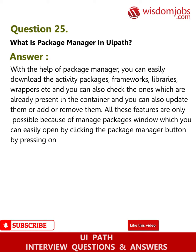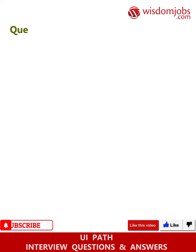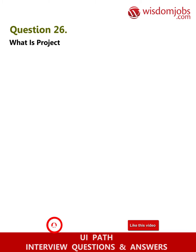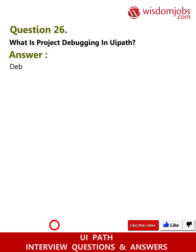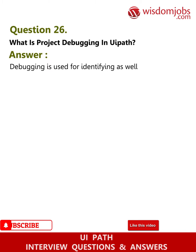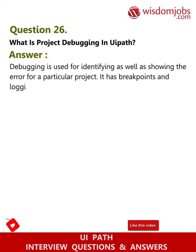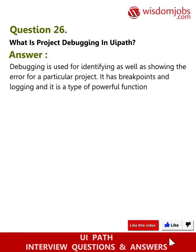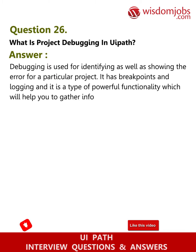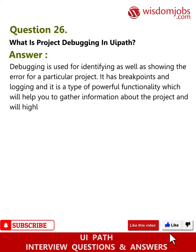Question 26: What is project debugging in UiPath? Answer: Debugging is used for identifying and showing errors for a particular project. It has breakpoints and logging, and it is a type of powerful functionality that helps you gather information about the project and highlight errors step by step.